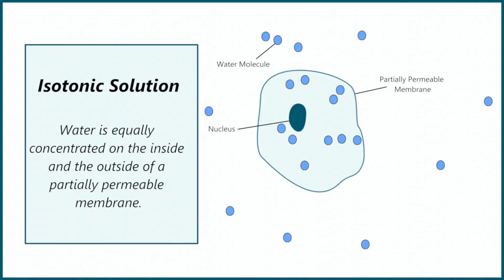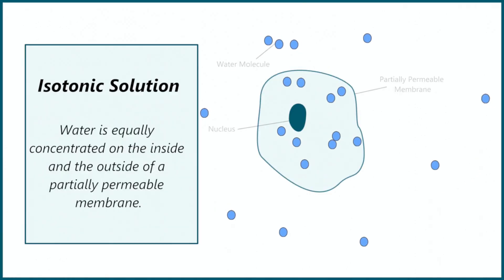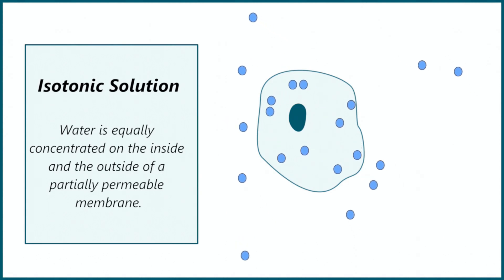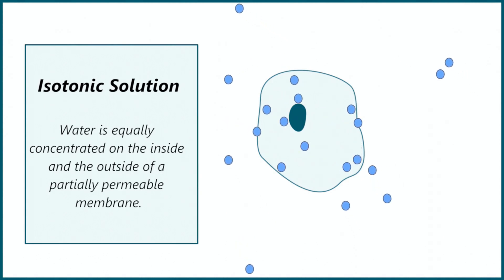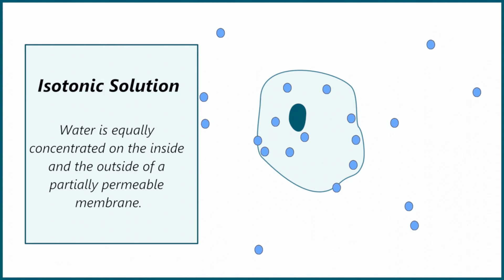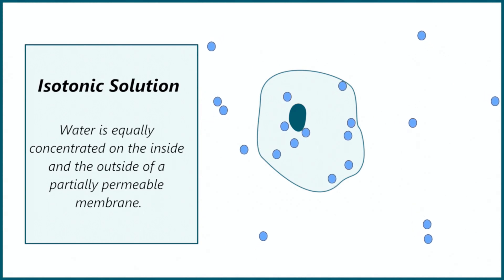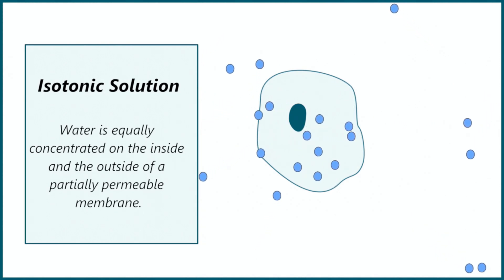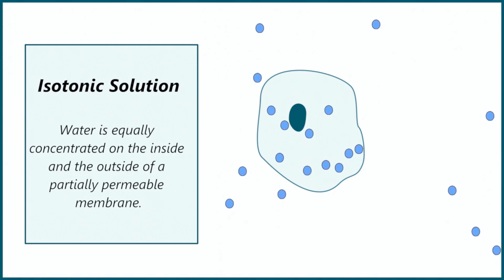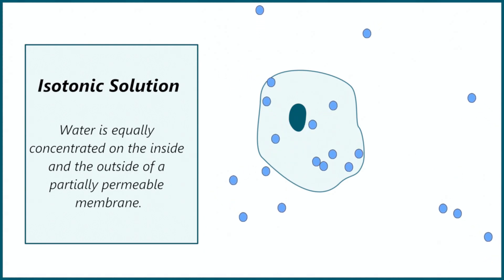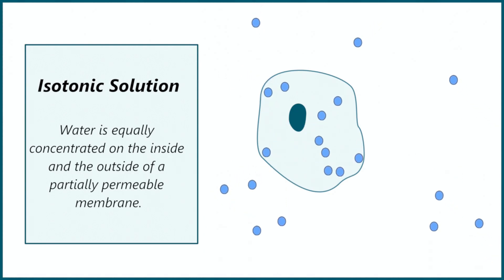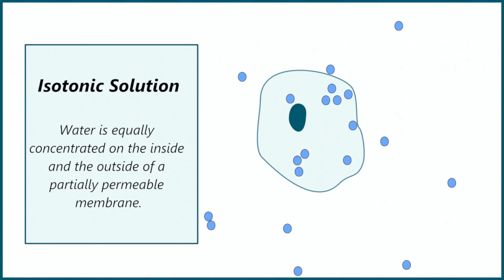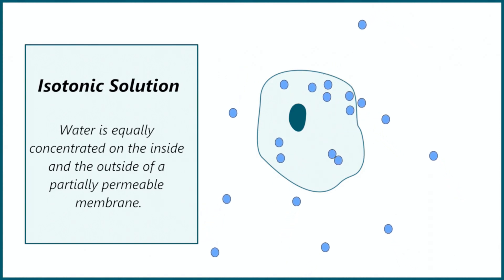For this cell the water is the same concentration on the inside and outside of the cell. Therefore some water moves into the cell and some moves out of the cell. As a result the cell doesn't change. When there is an equal concentration of water inside and outside of a cell it is known as an isotonic solution.